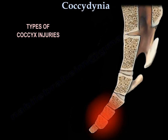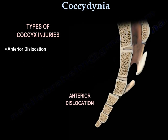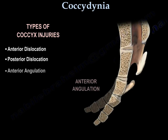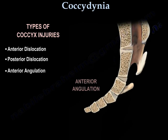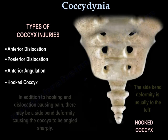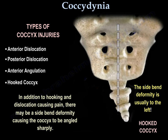The types of coccyx injuries include anterior dislocation, posterior dislocation, anterior angulation, and hooked coccyx. In addition to hooking and dislocation causing pain, there may be a side bend deformity causing the coccyx to be angled sharply. The side bend deformity is usually to the left, as can be seen in the hooked coccyx.